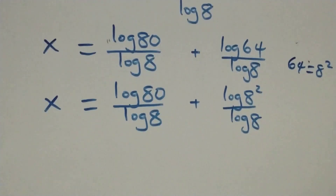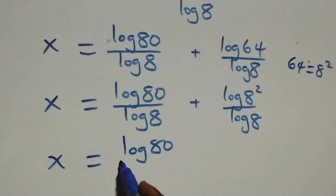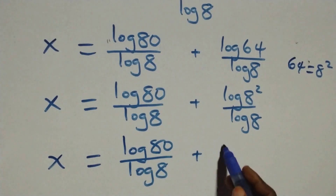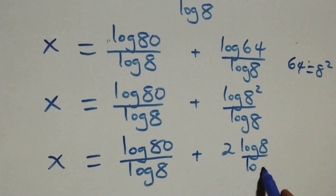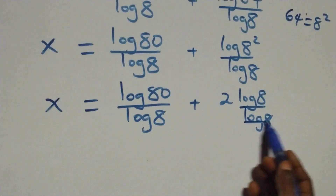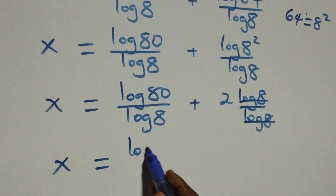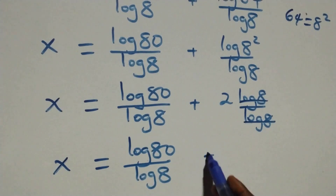We apply the power law of logarithms, giving x equals log 80 over log 8 plus 2 log 8 over log 8. Log 8 cancels each other, leaving 2. So x equals log 80 over log 8 plus 2.